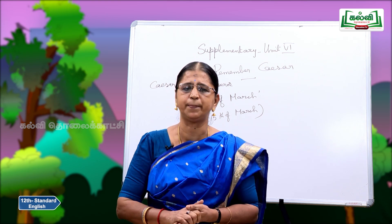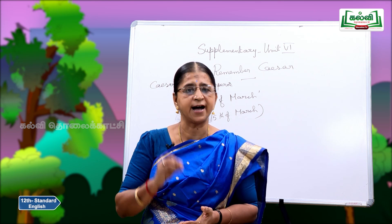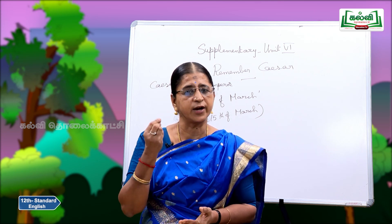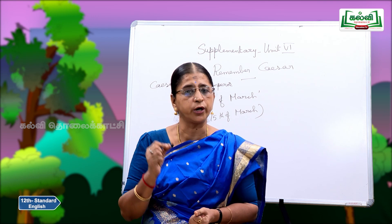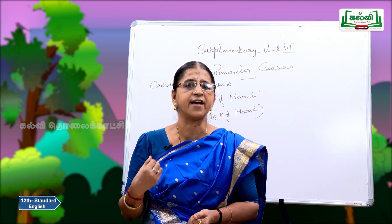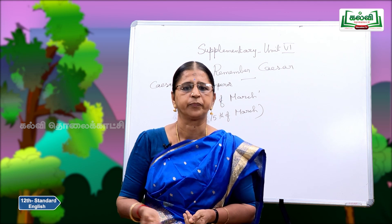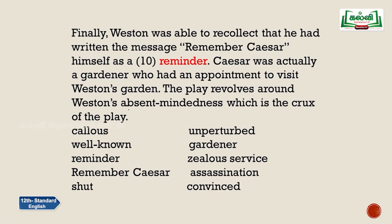Caesar was actually a gardener who had an appointment to visit Weston's garden. The play revolves around Weston's absent-mindedness, which is the crux of the play. Many of us have found ourselves in awkward positions because of our absent-minded nature. We have completed the summary exercise choosing words: careless, unperturbed, well-known, gardener, reminder, zealous service, remember Caesar, assassination, shut, convinced.